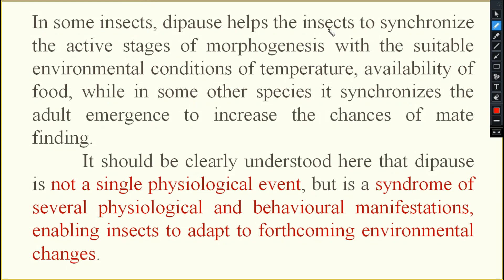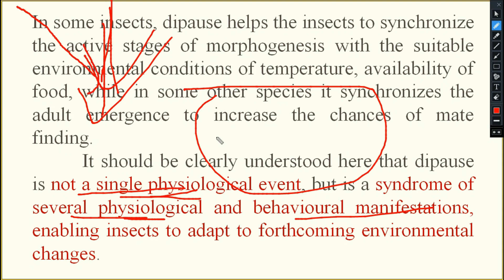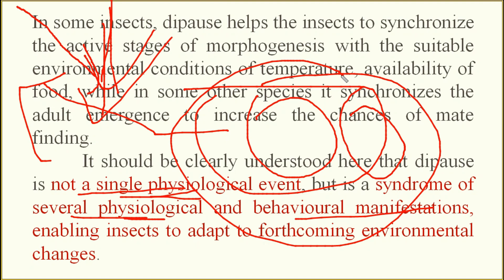In some insects, diapause helps synchronize the active stages of morphogenesis with suitable environmental conditions of temperature and availability of food. In some other species it synchronizes adult emergence to increase the chance of mate-finding. It should be clearly understood that diapause is not a single physiological event, but a syndrome of several physiological and behavioral manifestations. Before temperature reduces to a critical point, the insect perceives the change, undergoes physiological and behavioral changes, and then enters diapause.